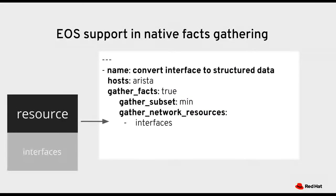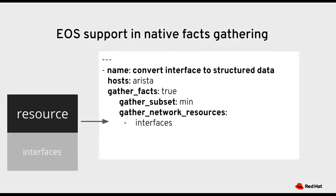Here's a quick example of one of the changes in 2.9. You've always had to have gather_facts false at the top of your playbook. With Ansible 2.9, we can set gather_facts to true. We use the Ansible network OS for the host to determine which facts module to use in the background. You can add the gather_network_resources keyword and list out which sections or resources of the configuration you want returned parsed as part of the facts.